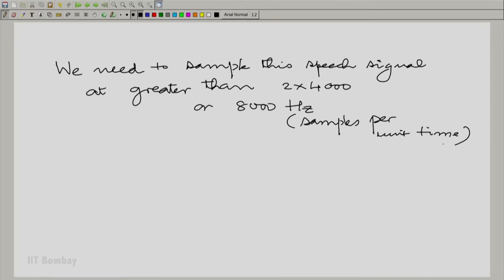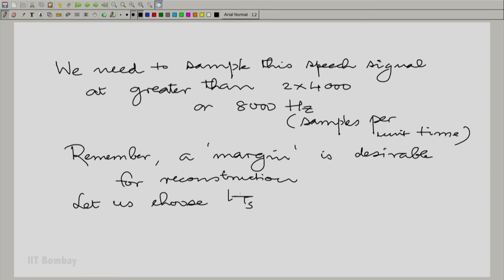For example, remember, we wanted a margin. So, let us choose a sampling rate of say 10 kilohertz.